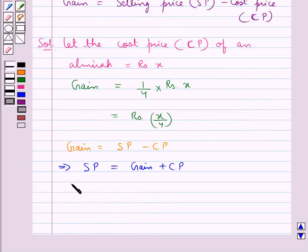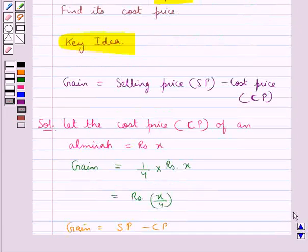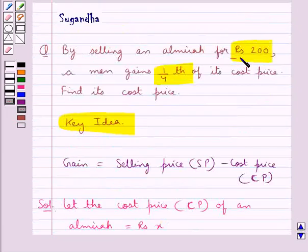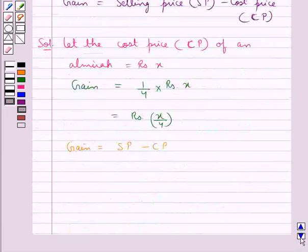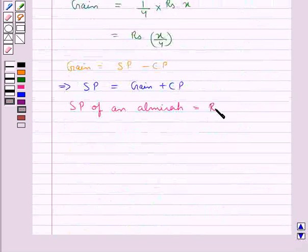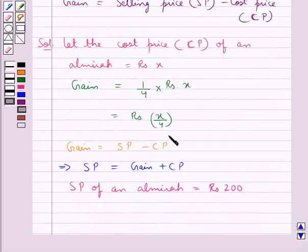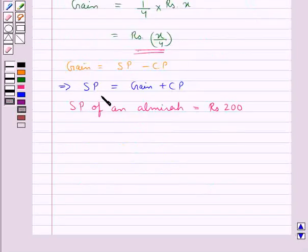Now, in the question we have that the selling price of an Almira is given as Rs. 200. And we have got the gain as Rs. X/4, and the cost price is Rs. X. So we will substitute all these values.